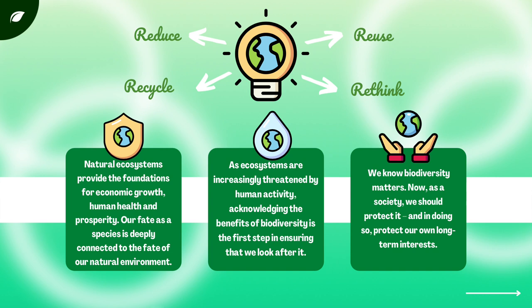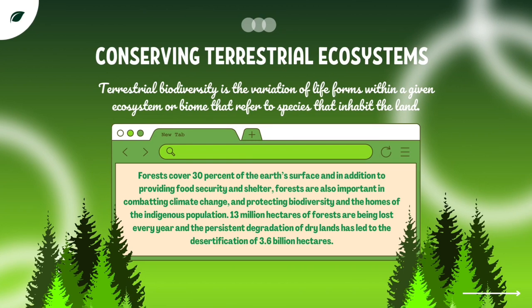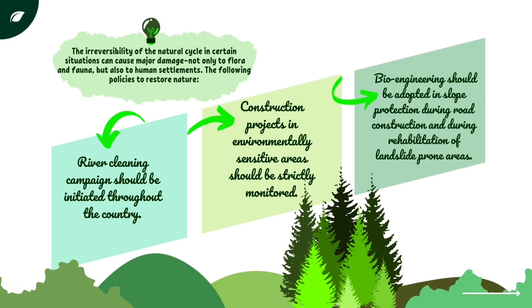Conserving terrestrial ecosystems: terrestrial biodiversity is the variation of life forms within a given ecosystem or biome, referring to species that inhabit the land. Nepal has experience in protecting forests of different types — wild animals such as leopards and bears were rare a few decades ago, but are now growing in number. Worldwide, 2.6 billion people depend directly on agriculture, but 52% of the land used for agriculture is moderately or severely affected by soil degradation. Policies to restore nature include river cleaning campaigns, strict monitoring of construction projects in environmentally sensitive areas, and the adoption of bioengineering in slopes.